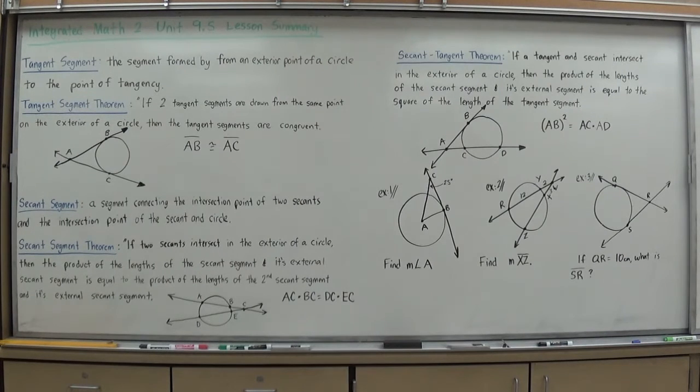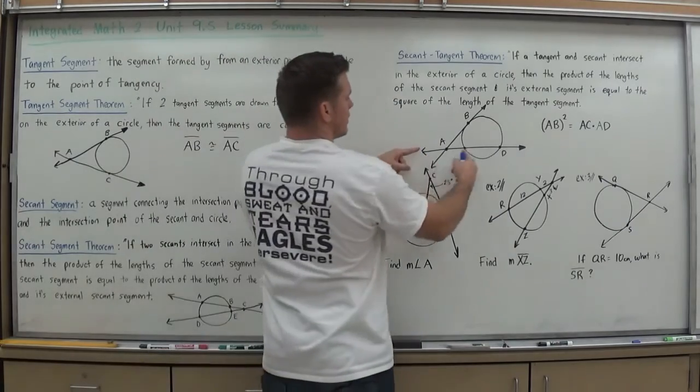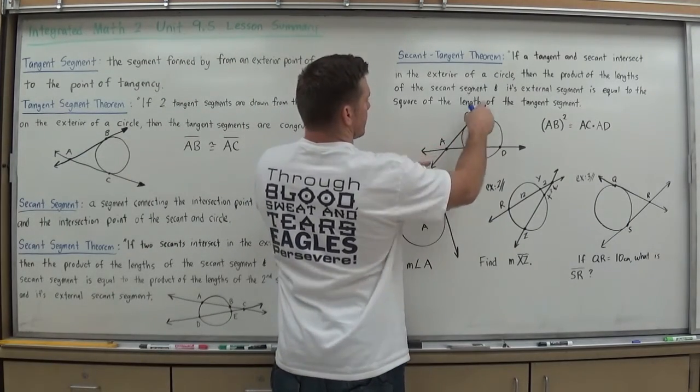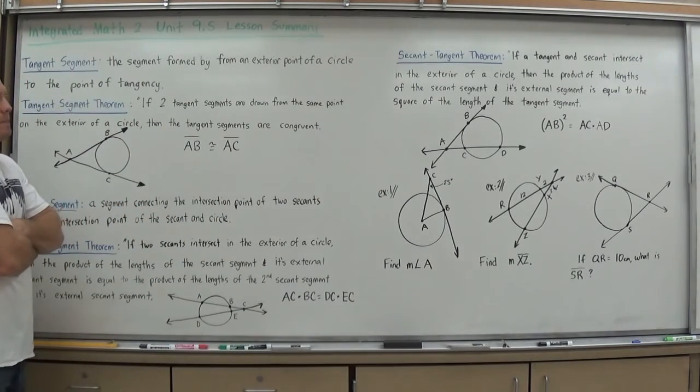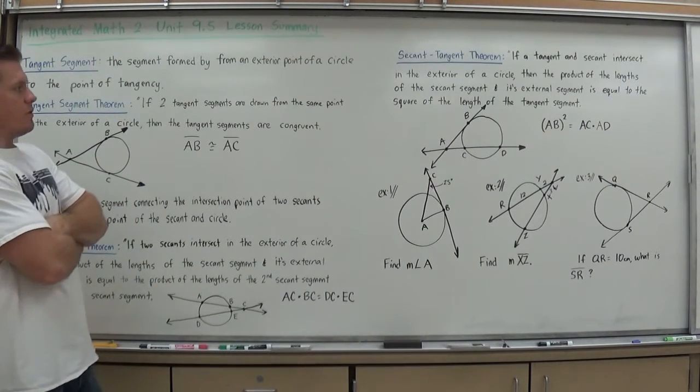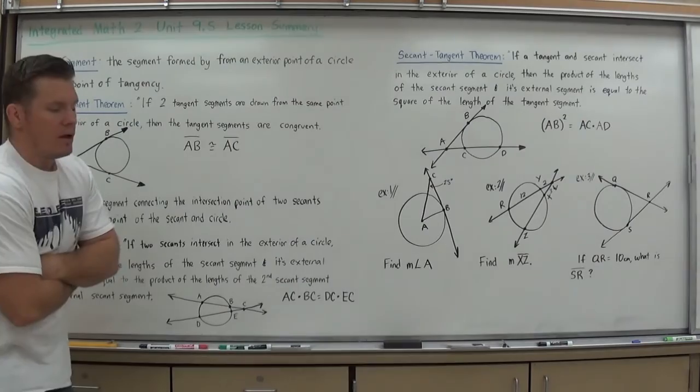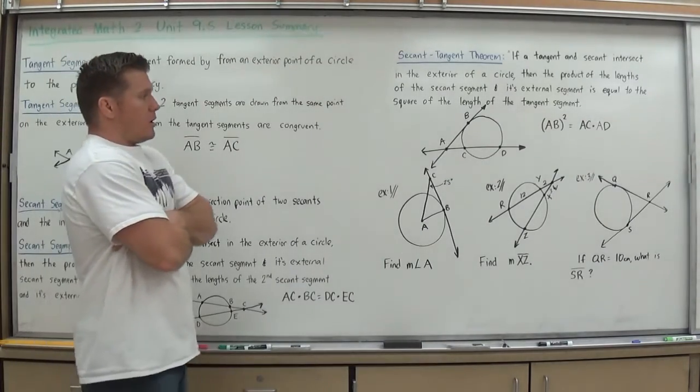Our last theorem here today combines the two of these and gives us a secant and a tangent theorem. The secant tangent theorem states, if a tangent and secant intersect in the exterior of a circle, then the product of the lengths of the secant segment and its internal segment is equal to the square of the length of the tangent segment.